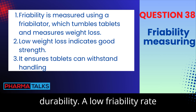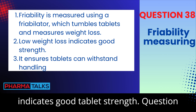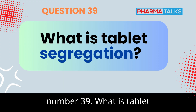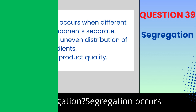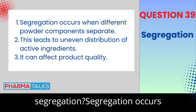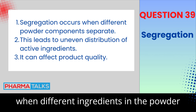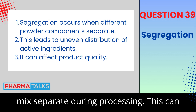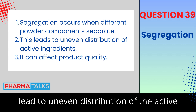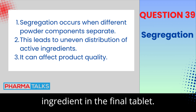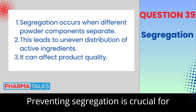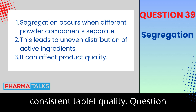A low friability rate indicates good tablet strength. Question 39: What is tablet segregation? Segregation occurs when different ingredients in the powder mix separate during processing. This can lead to uneven distribution of the active ingredient in the final tablet. Preventing segregation is crucial for consistent tablet quality.